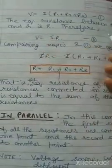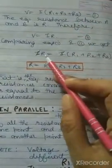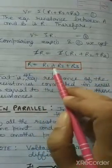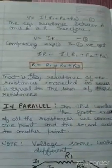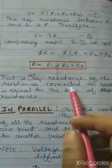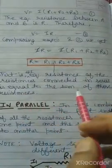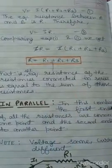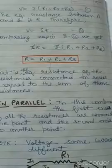The equivalent resistance we have taken as R, so V = IR. Comparing these two equations, we get IR = I(R1 + R2 + R3). I cancels out, giving R = R1 + R2 + R3. So we can say that the equivalent resistance of resistances connected in series is equal to the sum of the individual resistances: R = R1 + R2 + R3.